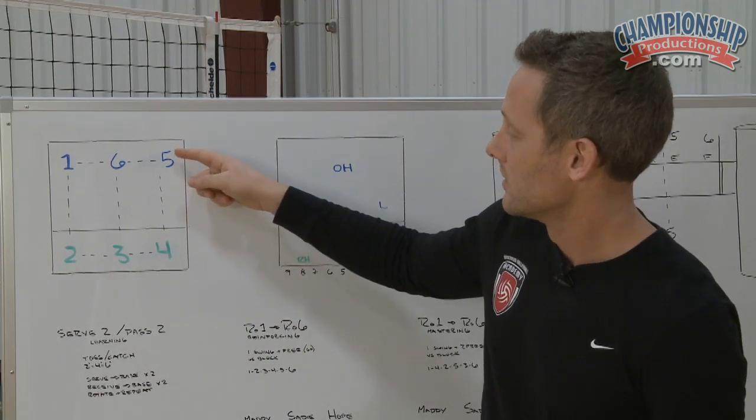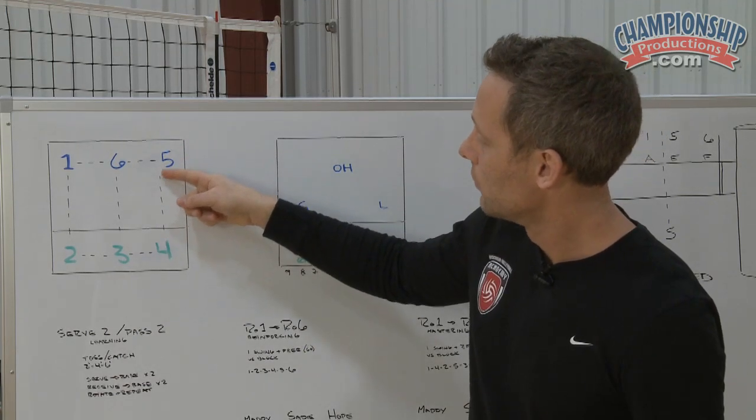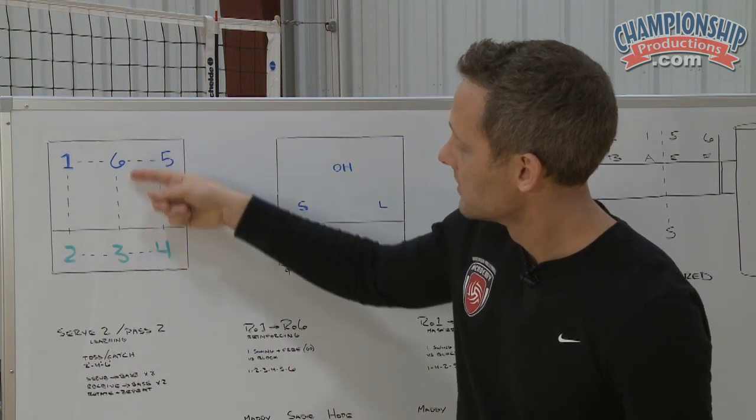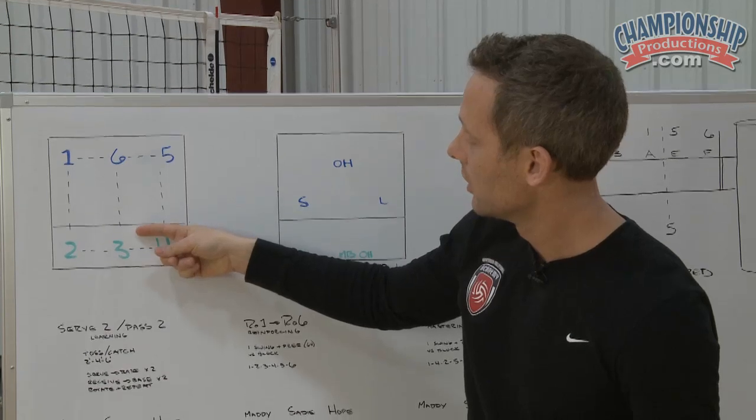The way that works is if I'm this player five, I can move all the way in to this space because I'm still behind number four and inside of number six. So five can go here.